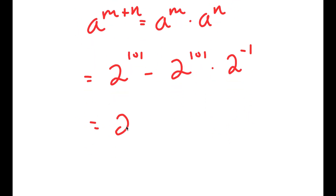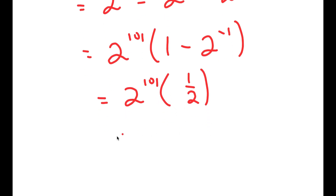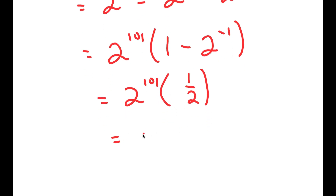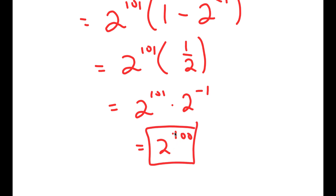And now if I factor out 2 to the power of 101, I get 2 to the power of 101 times 1 minus 2 to the power of negative 1, which is equal to 2 to the power of 101 times one half, which is equal to 2 to the power of 101 times 2 to the power of negative 1, which equals 2 to the power of 100. So that's the second method of solving this problem.